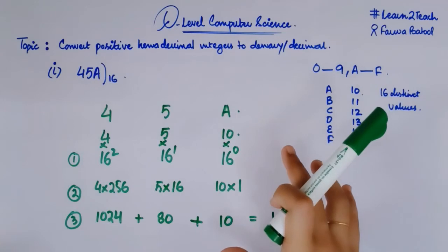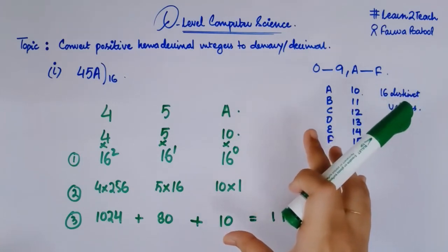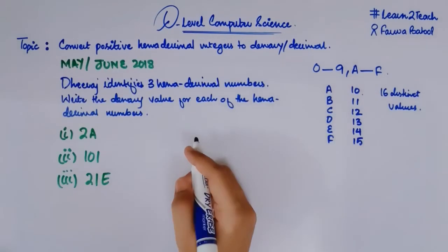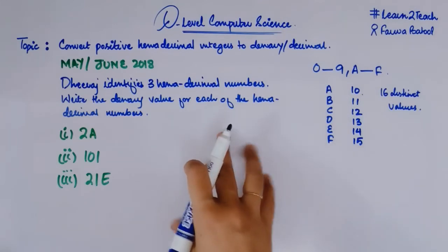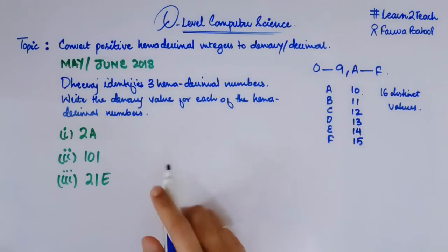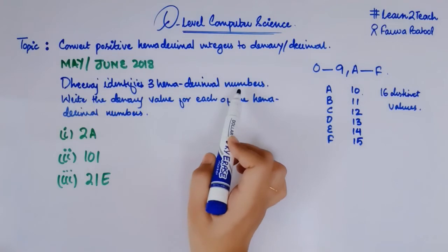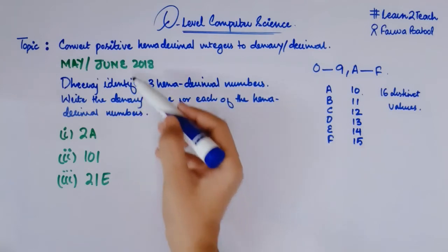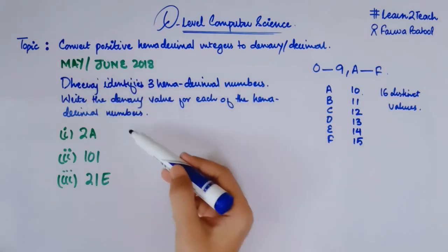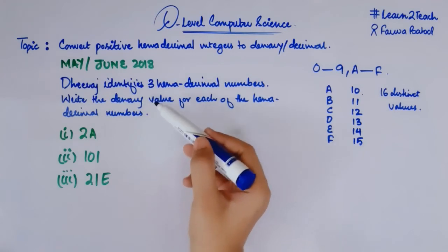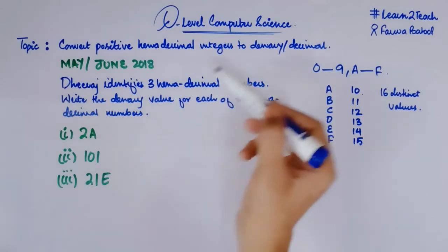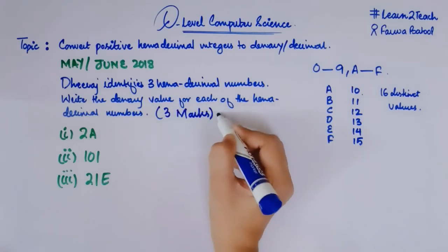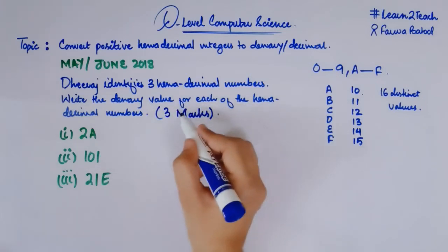It's a simple example. Let's take another example so that this topic can be more clear to you. I am moving towards the past paper example. Here I have a past paper question from May/June 2018. The question says: Dhiraj identifies three hexadecimal numbers — write the denary value for each. We need to find the denary or decimal value of these three hexadecimal numbers. It's a three-mark question; one mark for each correct conversion.